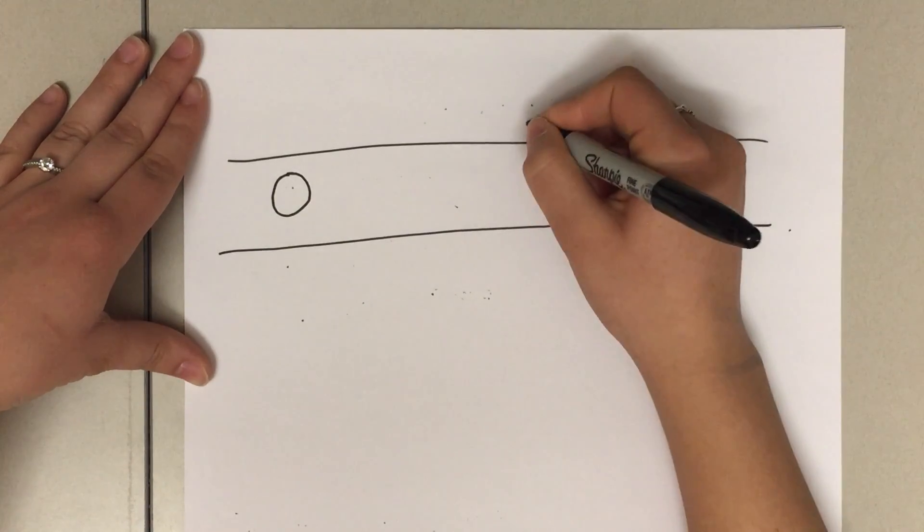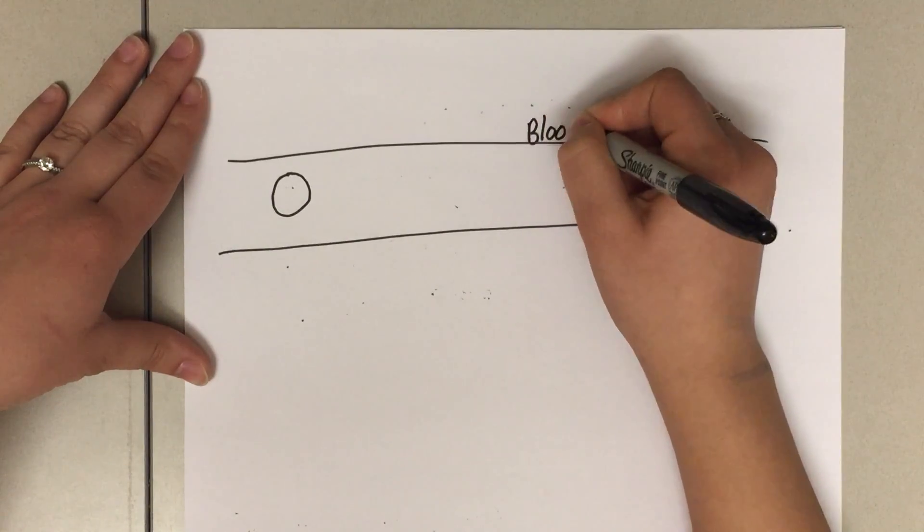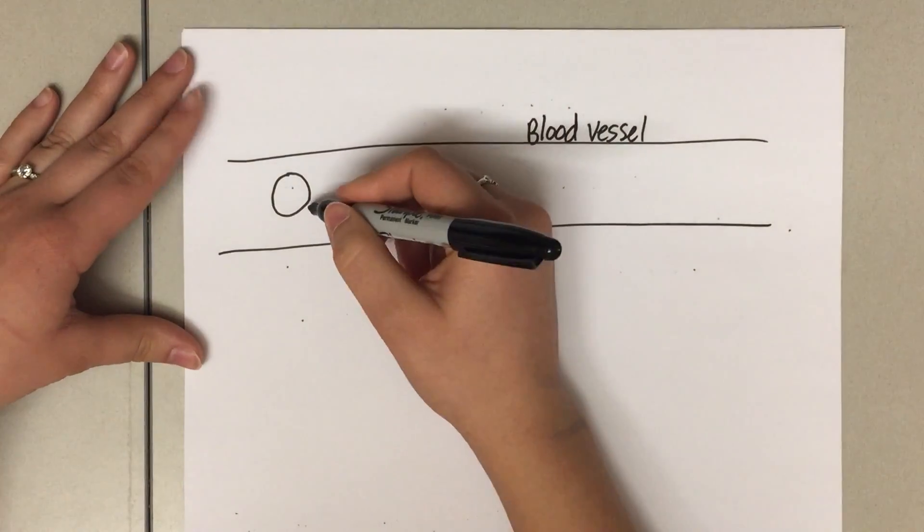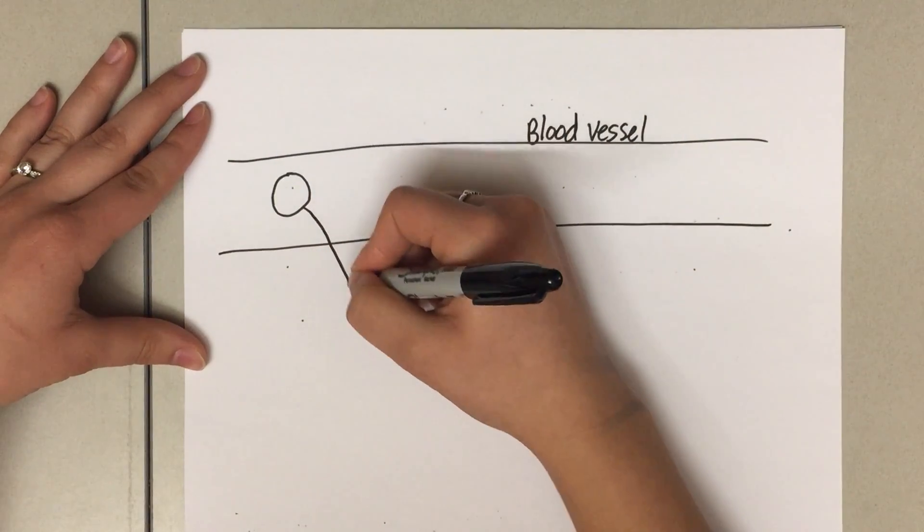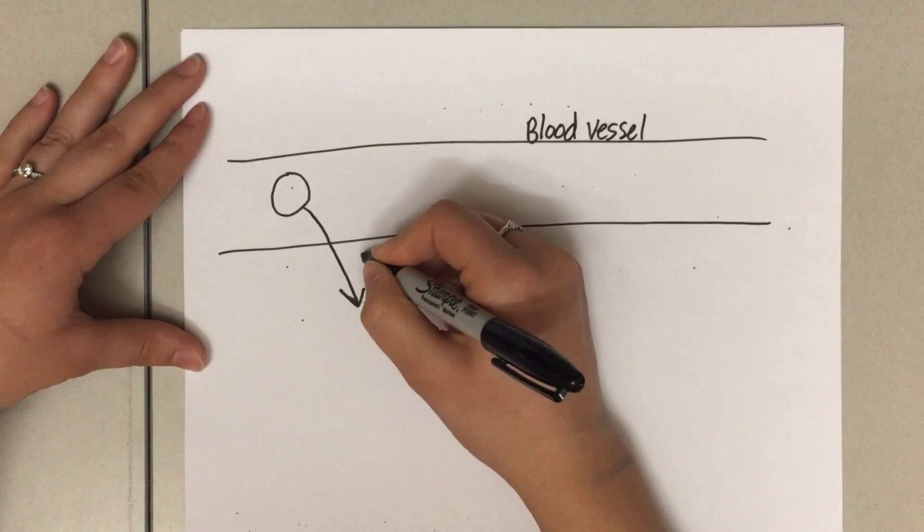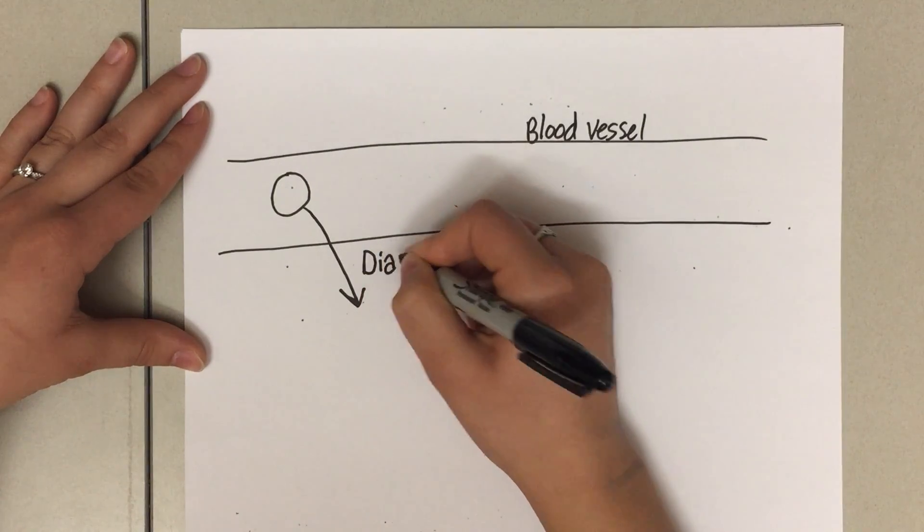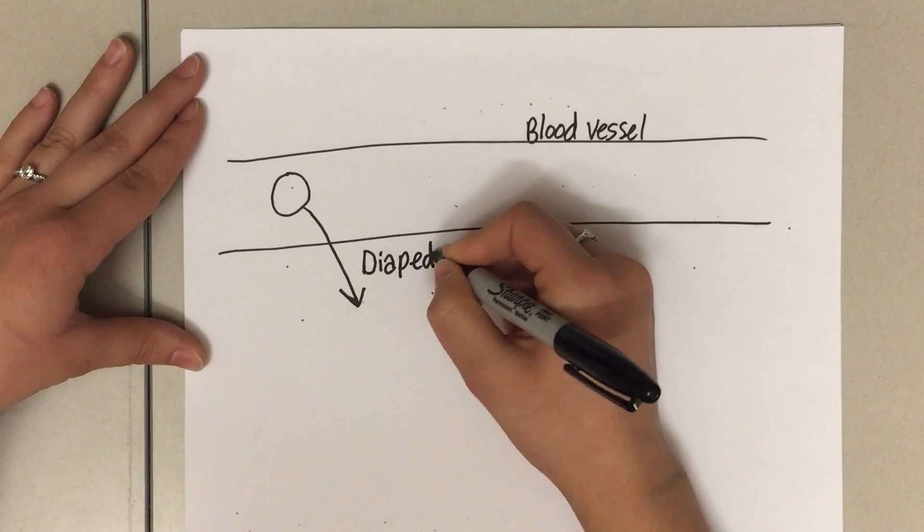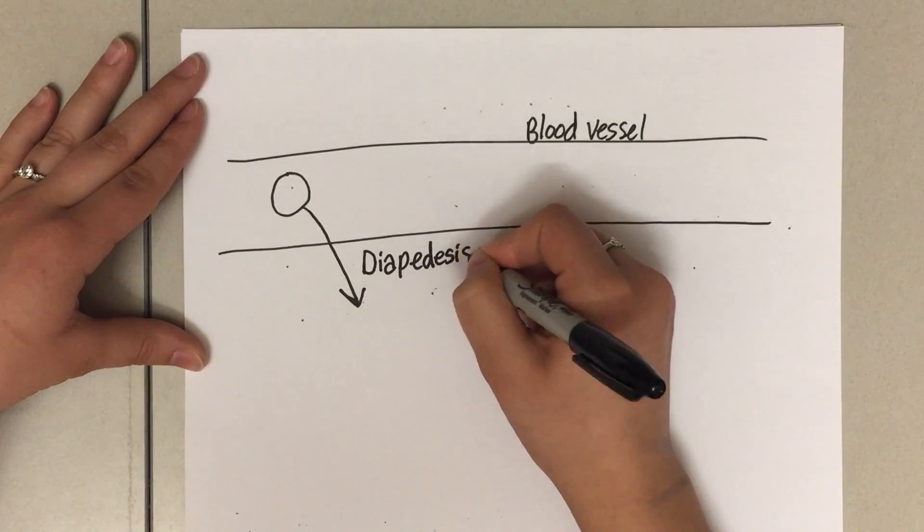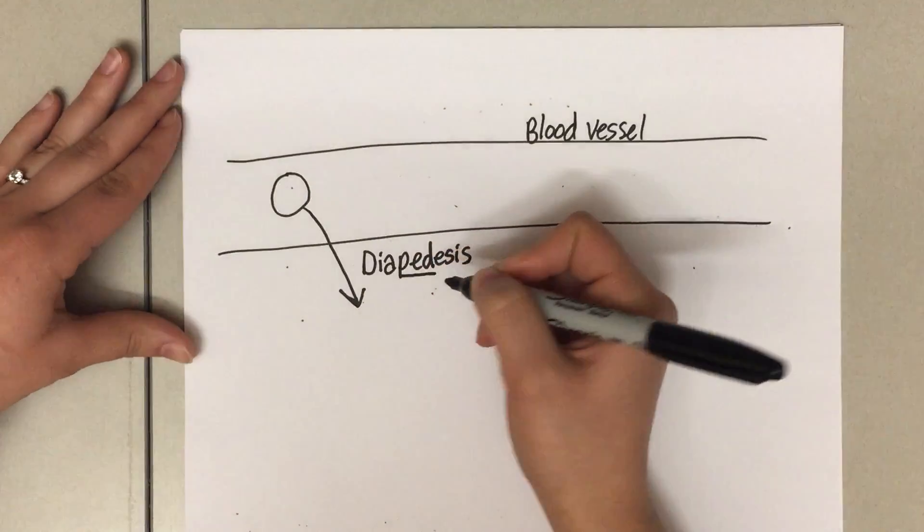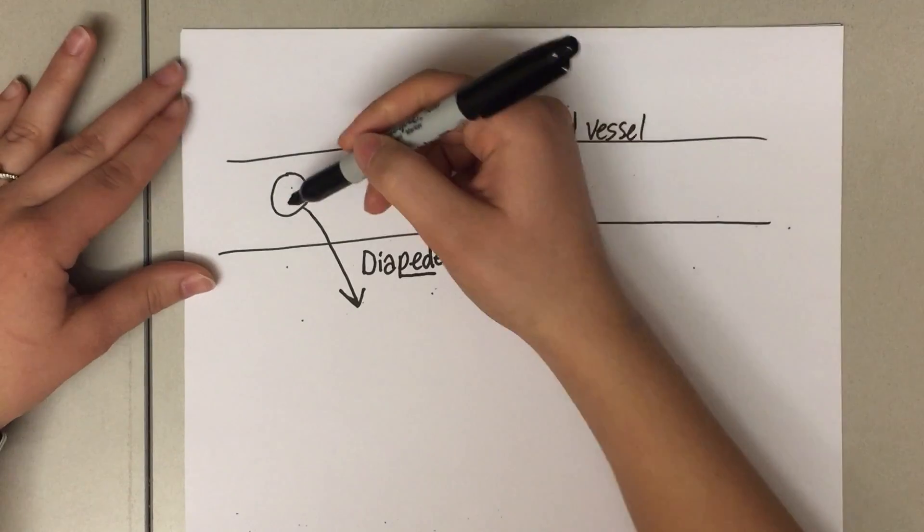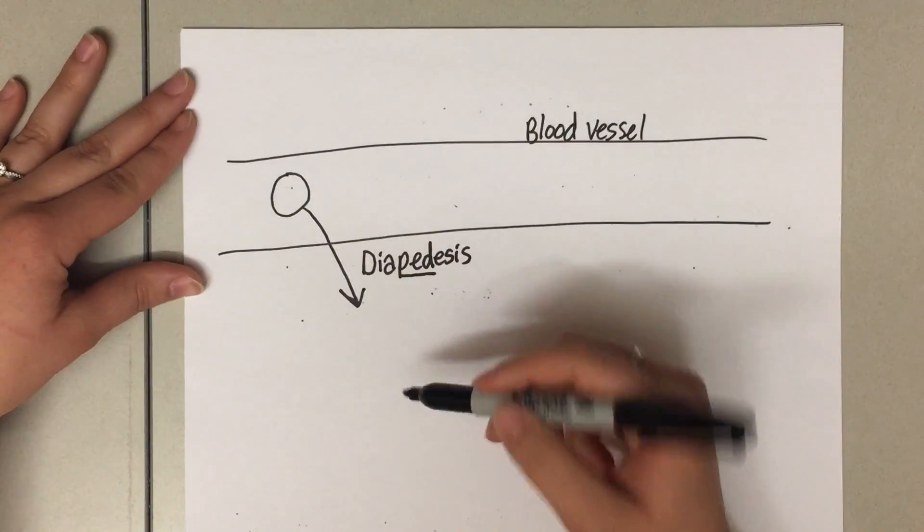The monocyte can exit the blood vessel through a process called diapedesis. Diapedesis has this word "ped" in there like pedestrian, so I think of this monocyte just kind of walking through that blood vessel and out into the surrounding tissues.